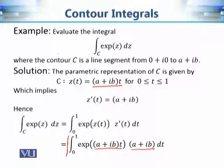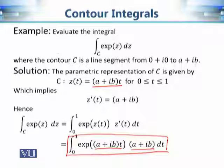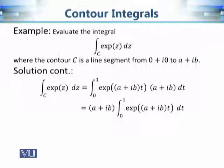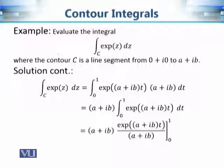This is an integral of a complex-valued function over the real interval [0, 1]. Since (a + ib) is a constant, we factor it outside the integral. We are left with the integral of e^((a+ib)t) dt from 0 to 1, which evaluates to e^((a+ib)t) / (a + ib), evaluated from 0 to 1.